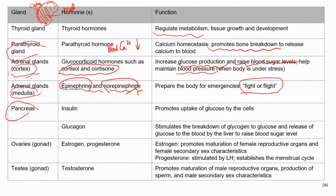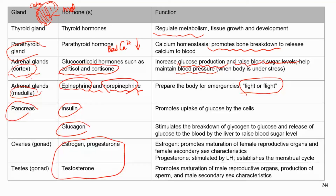The pancreas secretes insulin and glucagon, which we covered in detail in the digestive system — you can review that material there. The sex hormones secreted by the gonads are always about reproduction: they stimulate the development of reproductive organs and gametes — either sperm or eggs — and are also responsible for the development of secondary sex characteristics.